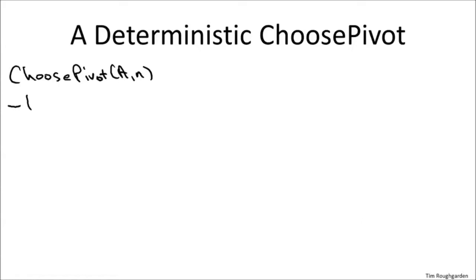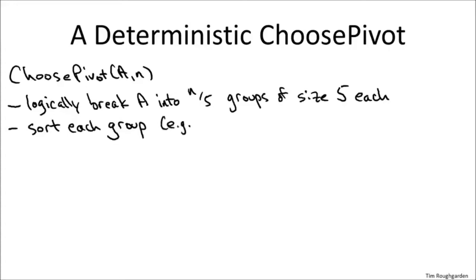So the high level strategy is going to be we're going to think about the elements of this array like sports teams and we're going to run a tournament, a two round knockout tournament. And the winner of this tournament is going to be who we return as the proposed pivot element. Then we'll have to prove that this is a pretty good pivot element. So there will be small groups of five teams each, five elements each. And to win your first round, you have to be the middle element out of those five. So that will give us n over five first round winners. And then the winner of that second round is going to be the median of those n over five winners from the first round.